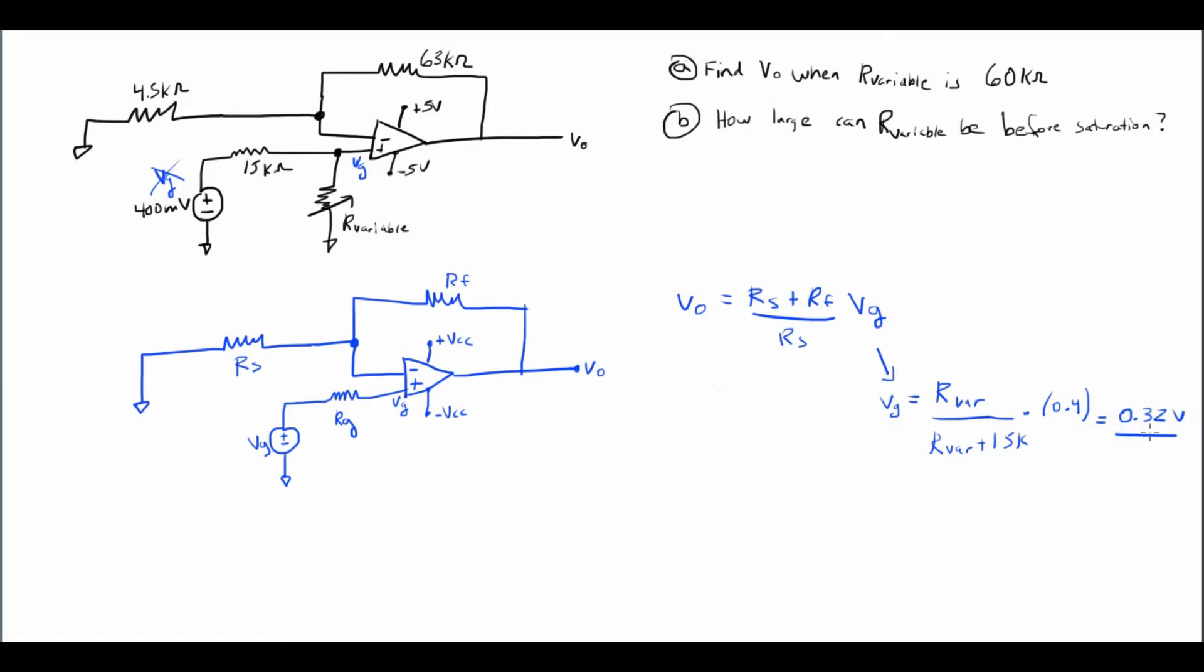Okay, so now we have VG. So now we can go ahead and we can directly plug VG back into my main formula. And in doing so, I can go ahead and just write it out this time. 4.5K plus 63K all over 4.5K times my new VG, 0.32. So VO is going to be realized as 4.8 volts.